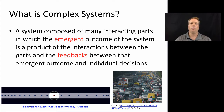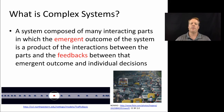So what is complex systems? Complex systems are a system composed of many interacting parts in which the emergent outcome of the system is a product of the interactions between those parts and the feedbacks between that emergent outcome and individual decisions. Complex systems, for me, is defined by these two notions of emergence and feedbacks.